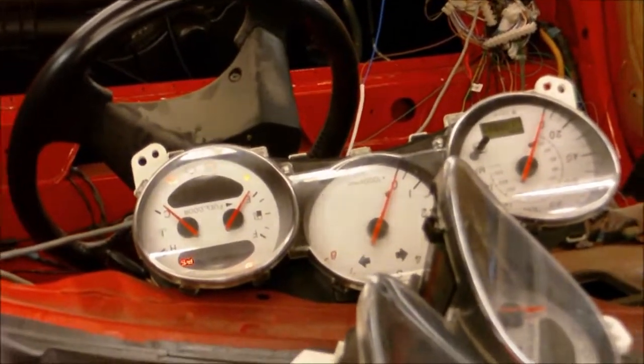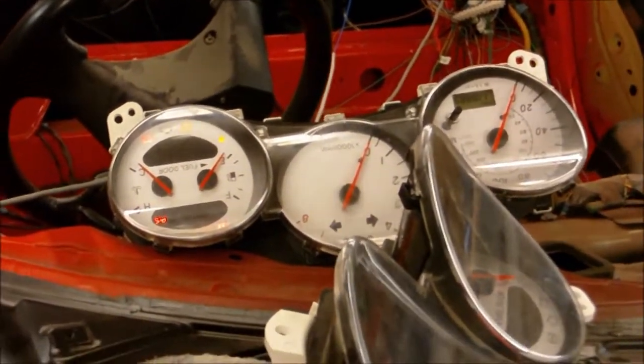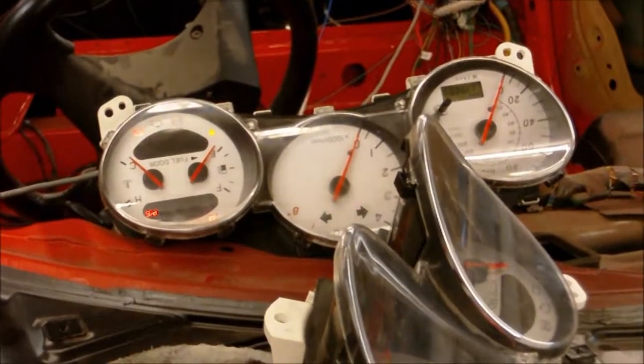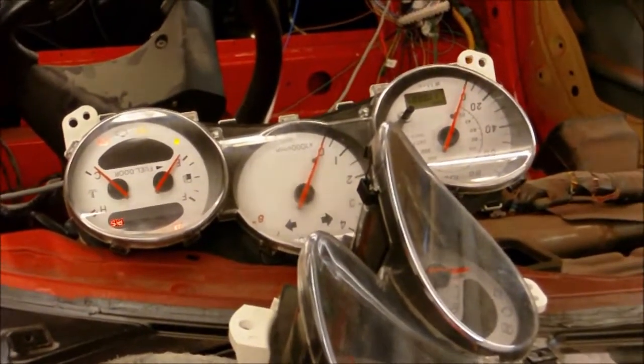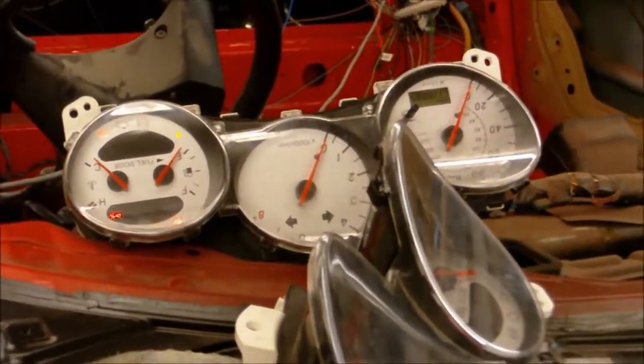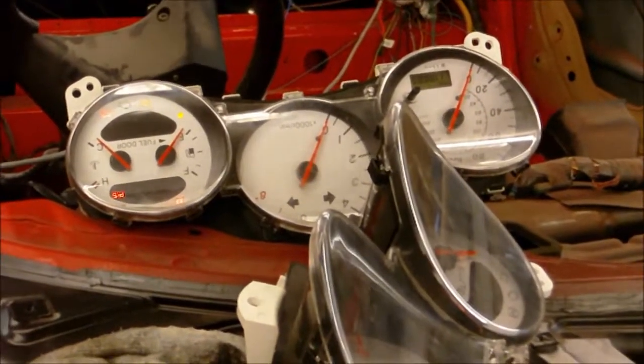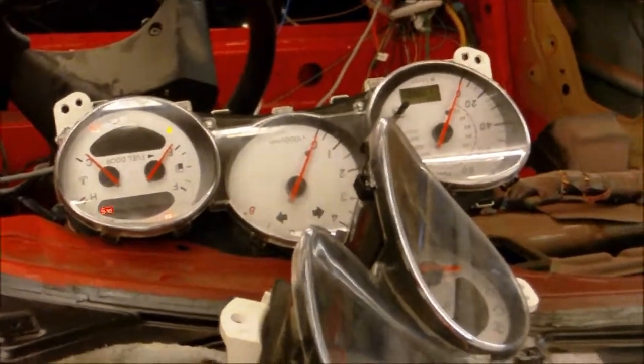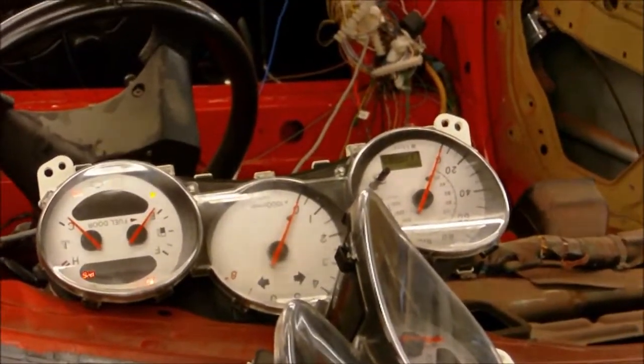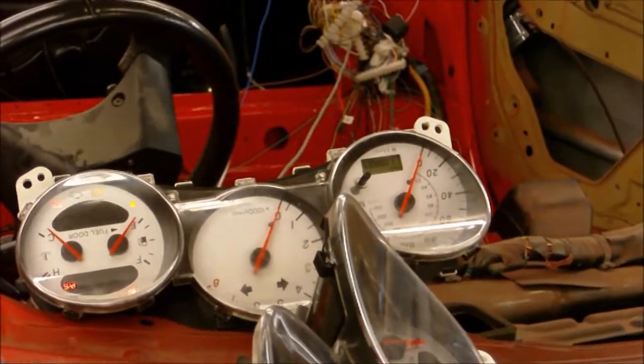And it shows the RPM on the gauge as it should be. Next bit, I just want to check the miles per hour, just make sure that. So I've got to replicate the speed signal coming from the ABS ECU, and then I should be able to get the speedometer to show between zero and, what's that go to, 140?